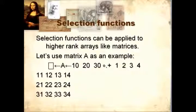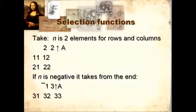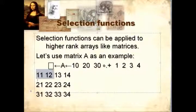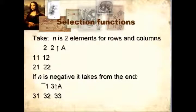Selection functions can also be applied to higher-rank arrays like matrices. For example, let's use matrix A, which is a 3 by 4. They can be used on matrices by specifying the rows and columns you want to take. For example, here we want to take the two first rows and the two first columns of A. If n is negative, just like in the vector case, it takes from the end — so here we want to take the last row and the first three columns.